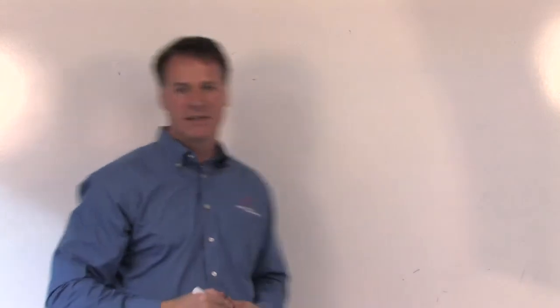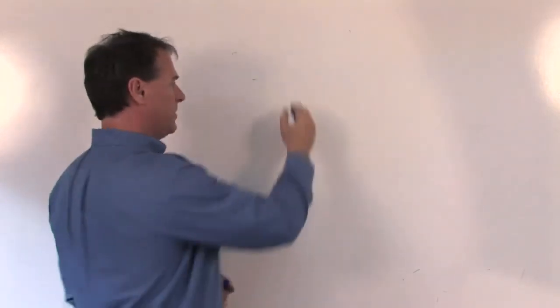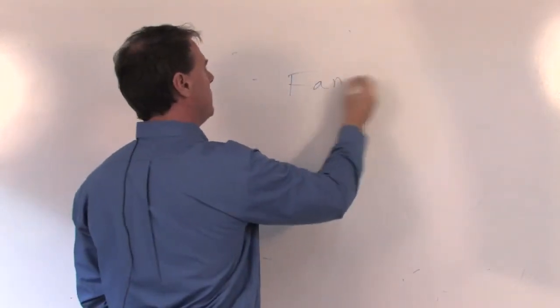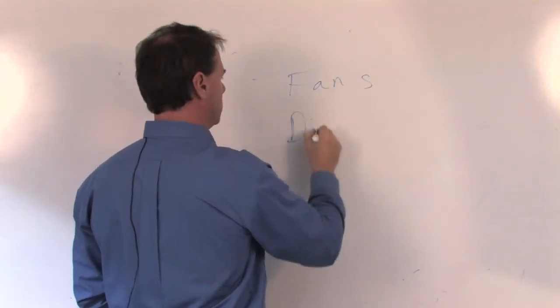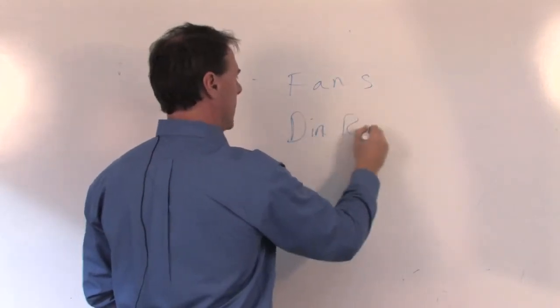The next category is fans. Fans can be mounted, the same kind of thing. Fans can be mounted on a DIN rail, direct, or PC.